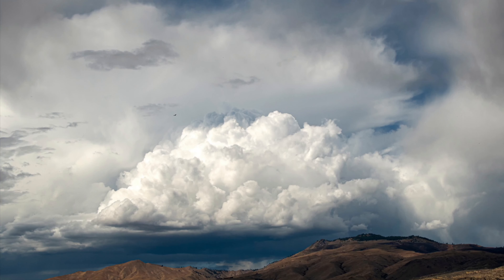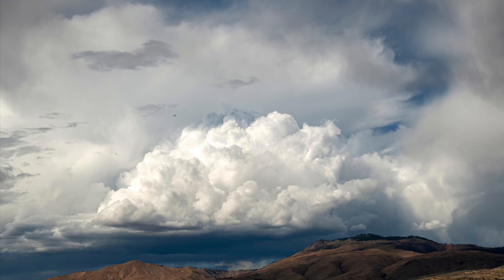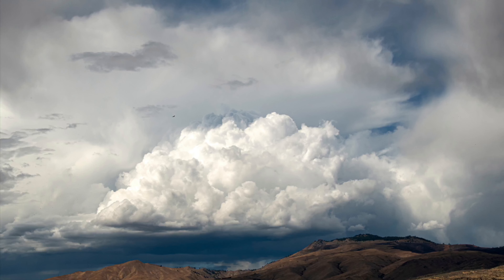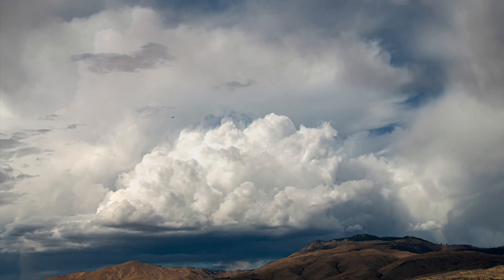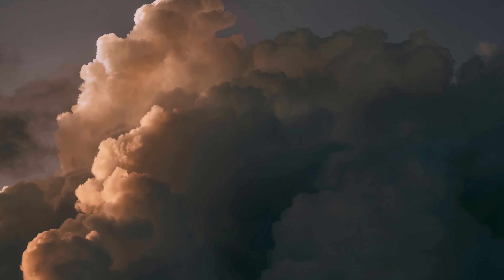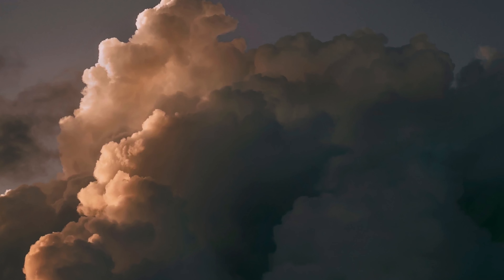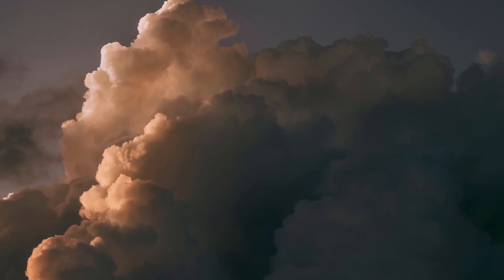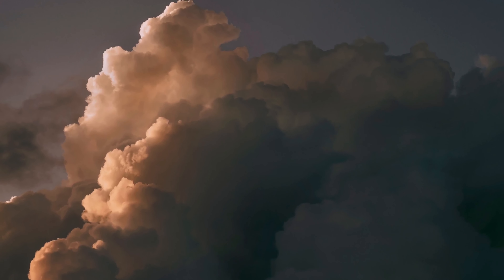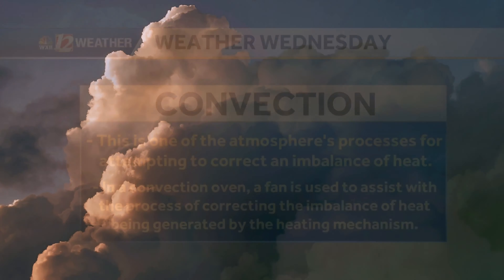If the atmosphere is too dry, then it's dry convection — like Phoenix in June. The atmosphere is always trying to reach equilibrium or be balanced, and this is just one of the atmosphere's processes for attempting that.